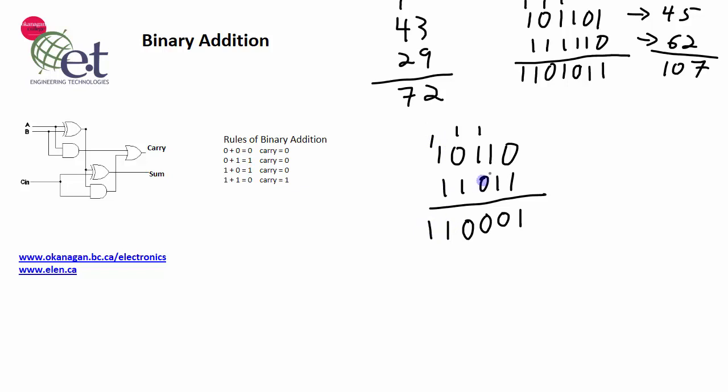So let's do our check again. 10110, that's 22. Convert 11011 into decimal, that's 27. Add those together, gives you 49. And we have 1 plus 16 plus 32, which also adds up to 49. So our addition was correct.